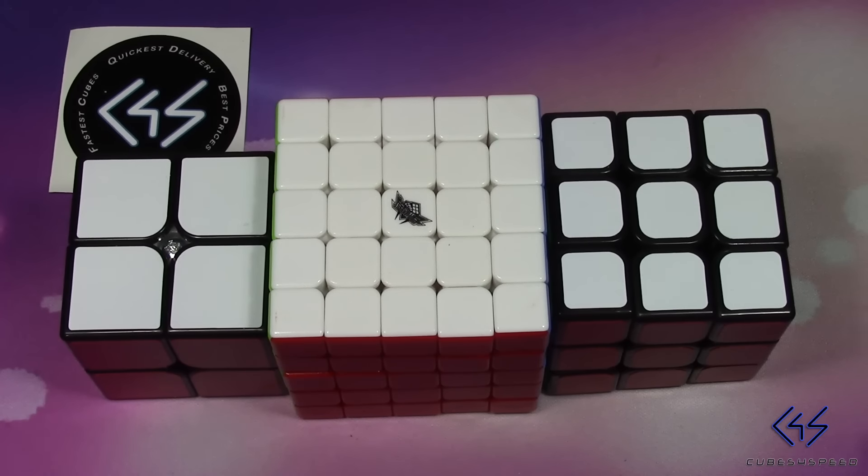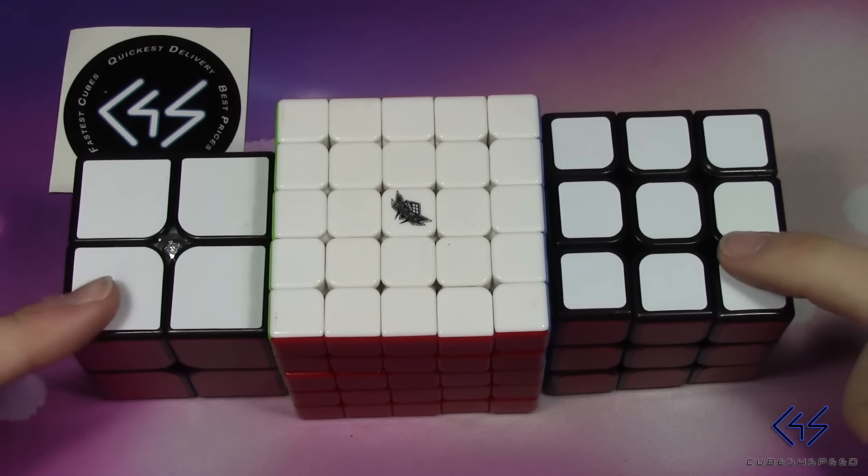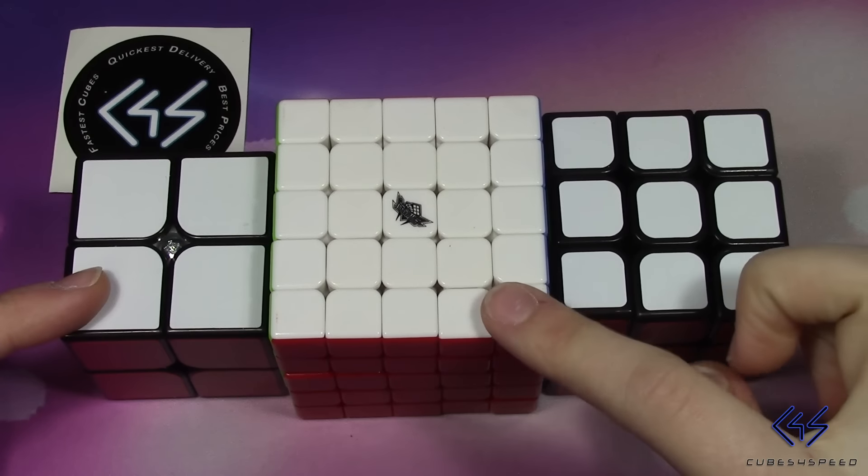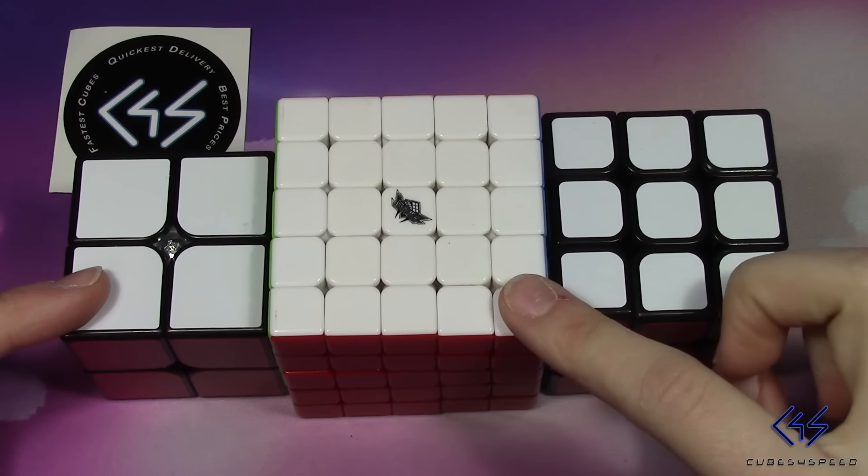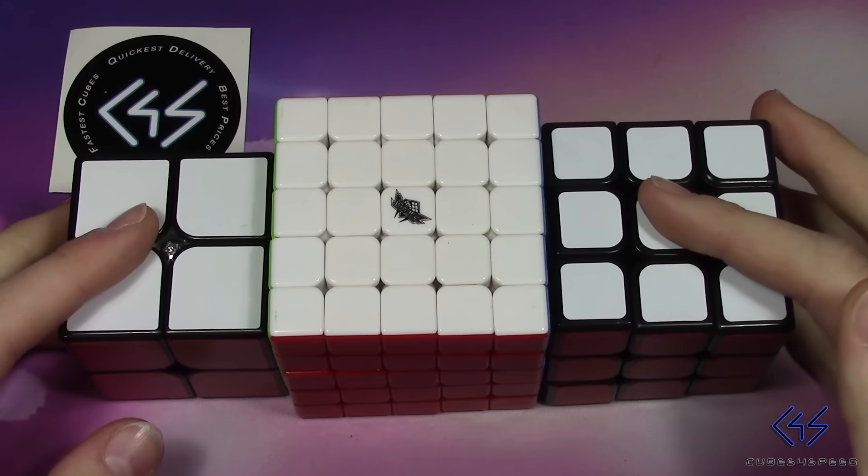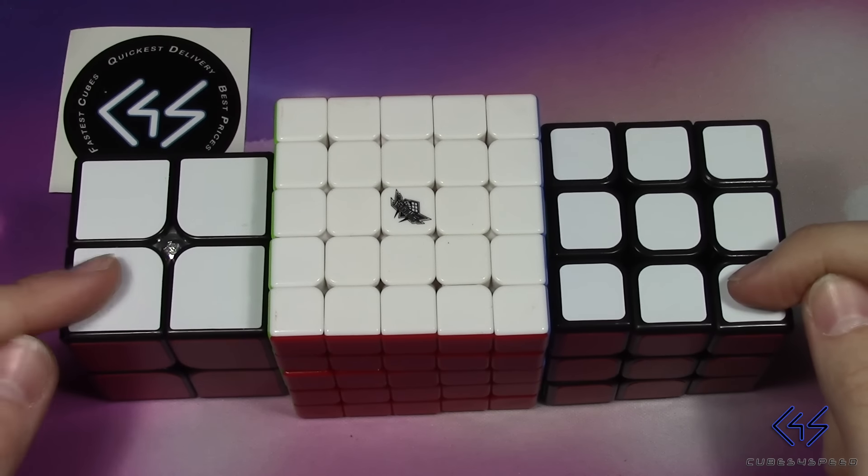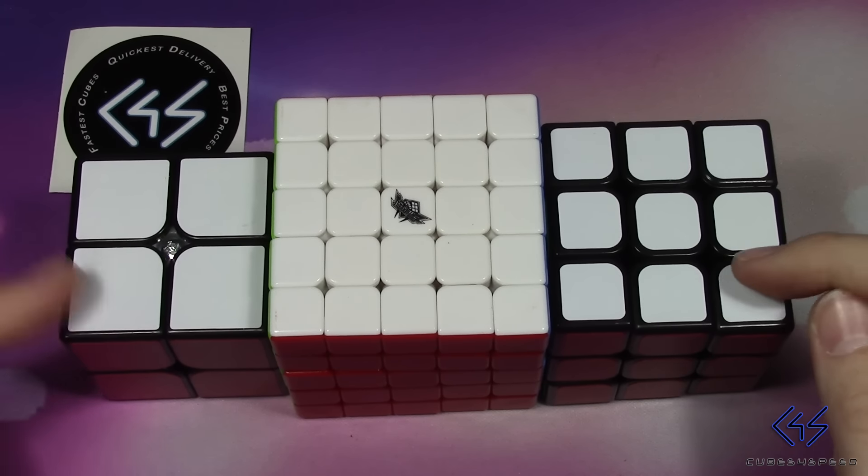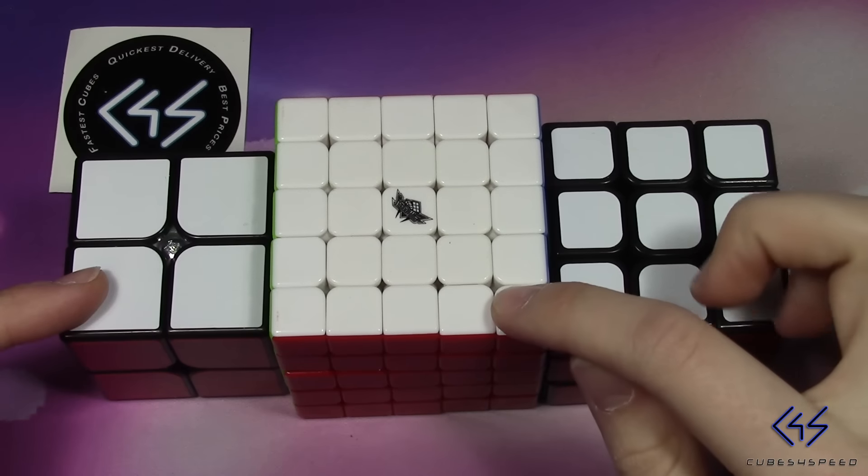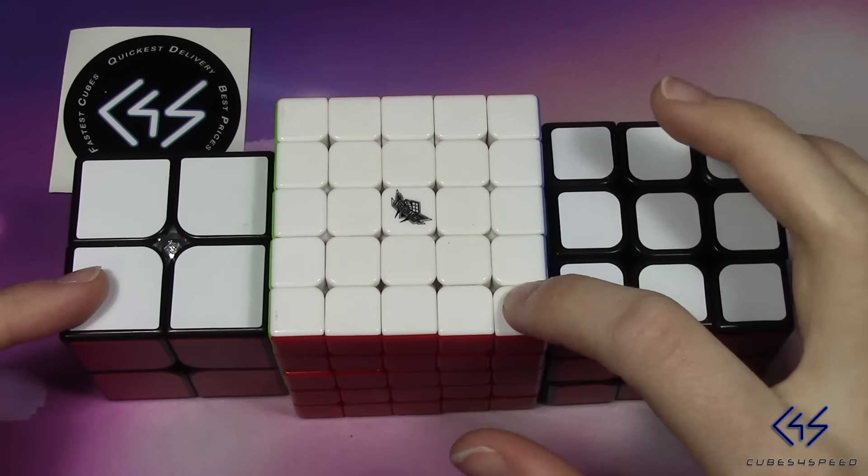Alright, so that's pretty much all for this unboxing. These two were definitely amazing out of the box. This needs a little bit of work, but I think it does have potential. Now again, all of these cubes are very cheap. The Qi Yi Sail is only $3.25, the Guan Po was only $3.50, and the Cyclone Boys G5 is only $12.